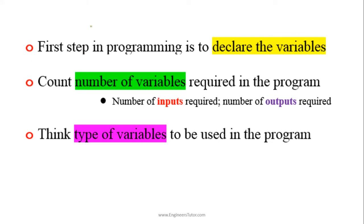The first step in programming is to declare the variables. When you are writing a program, first thing is to declare the variables required in the program, count number of variables required, number of inputs required and number of outputs required. Also think about whether the variables are of type integer, float, character, double, etc. This is the type of data we are going to use in the program.